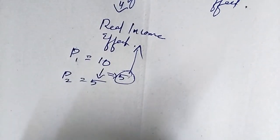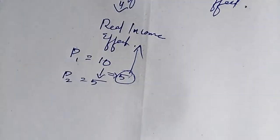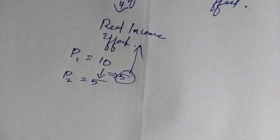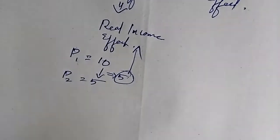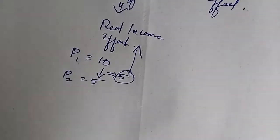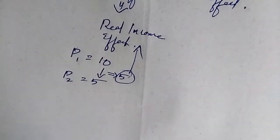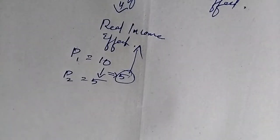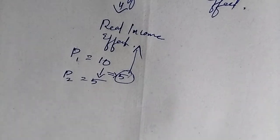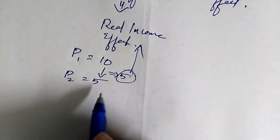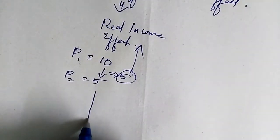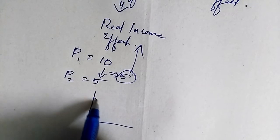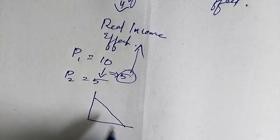This increase in purchasing power can be called real income. That means the additional benefit you get when the market condition is changed, or when the price is changed — the additional purchasing power you get — that is what we call real income. So this is one reason why the demand curve is sloping downwards.